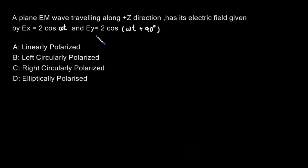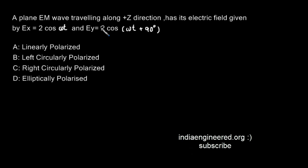This question was asked in GATE Electronics and Communication 1994. A plane electromagnetic wave is traveling along the positive z-direction. It has its electric field given by Ex = 2cos(ωt) and Ey = 2cos(ωt + 90°). We are asked what is the kind of polarization. Since we have Ex and Ey components, we need to check for polarization in the xy-plane.